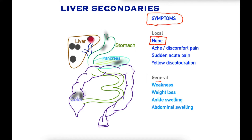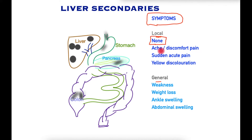If the metastases enlarge beyond a certain size, they will stretch the liver capsule, which is the cover on the liver itself. If that sheet is stretched, it will give rise to ache, discomfort, and pain.